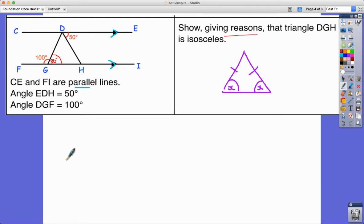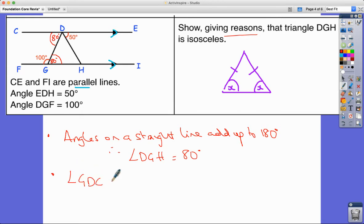Show giving reasons. I could say first of all angles on a straight line add up to 180 degrees, therefore angle DGH is 80 degrees. Then we could say I can see a zed angle or it's called an alternate angle here because I've got parallel lines. So I think I can say angle GDC and angle FGD are alternate and therefore equal to 80 degrees.